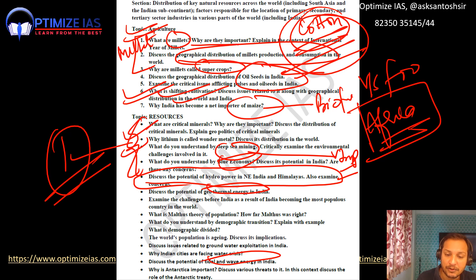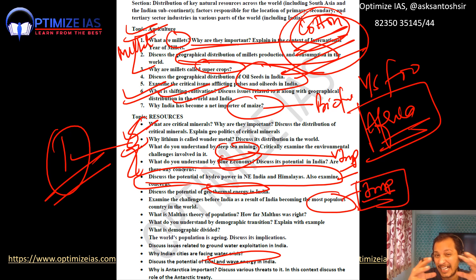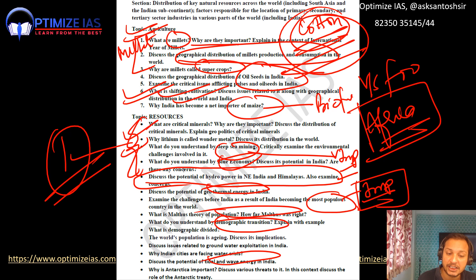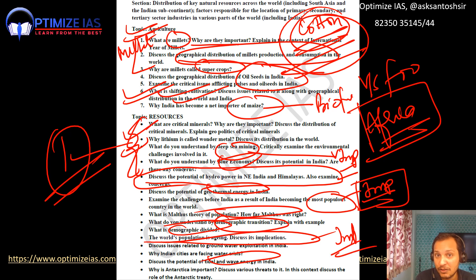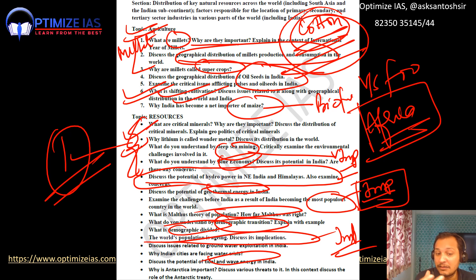Examine the challenges before India as it becomes the most populous country — what is the dynamics of population and resources? What is overpopulation, underpopulation, and optimal population? Malthus's theory of population, demographic transition, and demographic dividend are important. Aging population is a very important and often overlooked topic — what are the challenges of aging population in India, especially given the government's free medical services for those above 70?